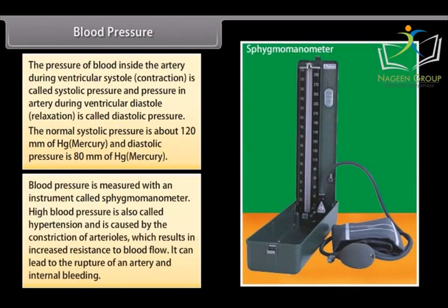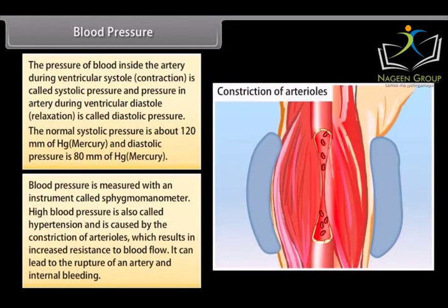High blood pressure is called hypertension and is caused by the constriction of arterioles which results in increased resistance to blood flow. It can lead to the rupture of an artery and internal bleeding.